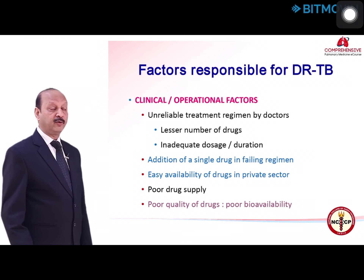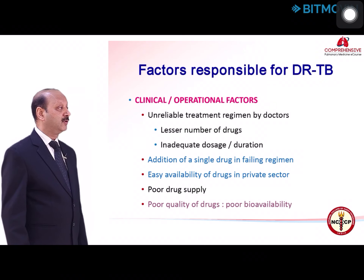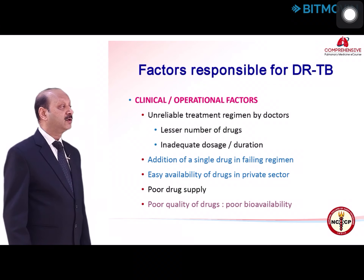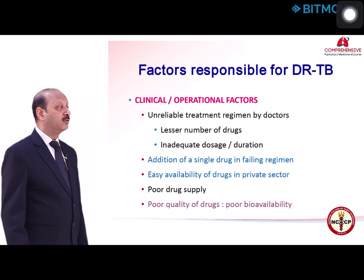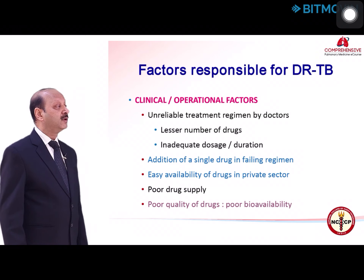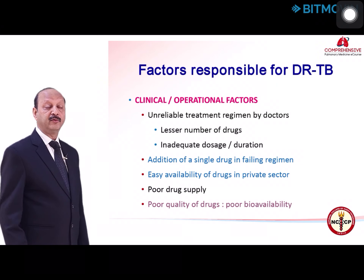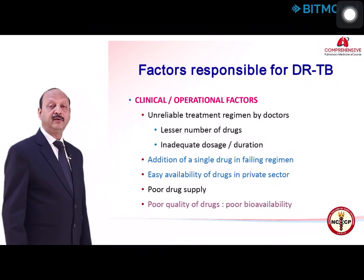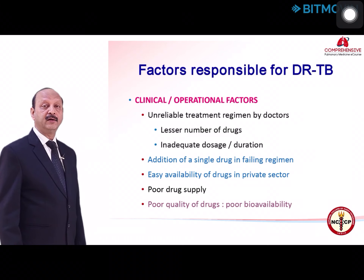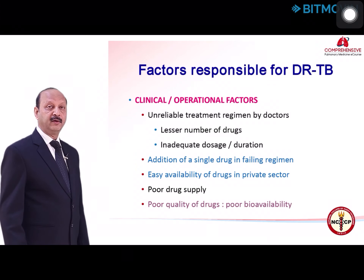Looking at factors which lead to development of drug-resistant TB, there are clinical and operational factors. One very important factor is an unreliable treatment regimen by doctors — either lesser number of drugs are prescribed, or in inadequate dosages or durations. Studies have shown that among 100 doctors, 70-80% prescribe different kinds of regimens. Adding a single drug to a failing regimen is another important factor; never add a single drug — at least 3 or 4 new drugs should be added. Drugs are also easily available and misused in the private sector.